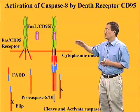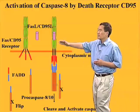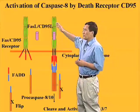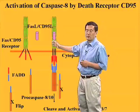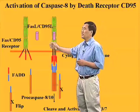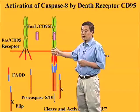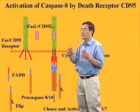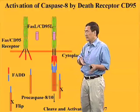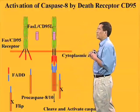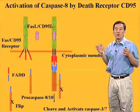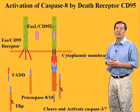In this way, caspase activation initiated from the receptor at the cell surface is called the extrinsic pathway, and caspase activation originating from mitochondria is called the intrinsic pathway.